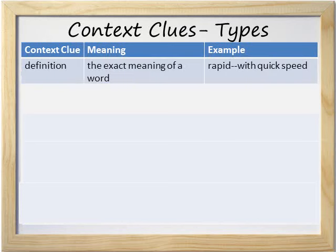The first type of context clue we'll learn about is a definition. A definition is the exact meaning of a word. For example, the definition of the word rapid is "with quick speed."